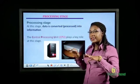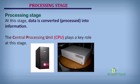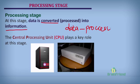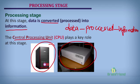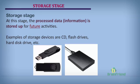Then we go to the main stage, which is the processing stage. Here, data is converted — it is processed into information. The central processing unit, the CPU, plays a major role in this stage. The data that you've gathered, sorted, collated, and inputted is processed with the help of the CPU.